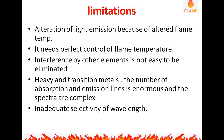The limitations of flame photometry include: alteration of light emission due to altered flame temperature, requiring perfect control of flame temperature. There is interference by other elements, which is not easy to eliminate. For heavy and transition metals, the number of absorption and emission lines is enormous and the spectra are complex, making determination impossible. There is also inadequate selectivity of wavelength in flame photometry.